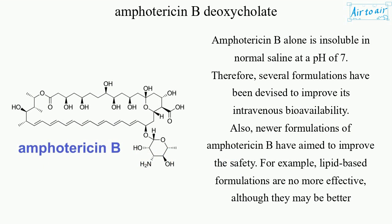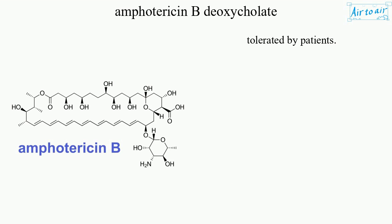Amphotericin B alone is insoluble in normal saline at a pH of 7. Therefore, several formulations have been devised to improve its intravenous bioavailability. Also, newer formulations of Amphotericin B have aimed to improve safety. For example, lipid-based formulations are no more effective, although they may be better tolerated by patients.